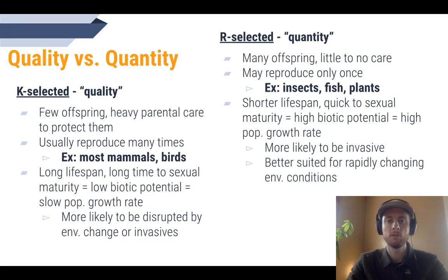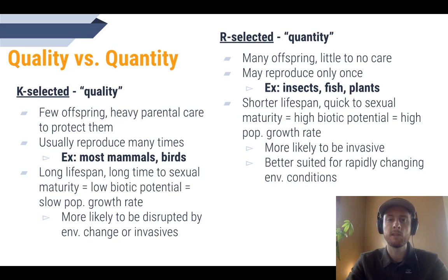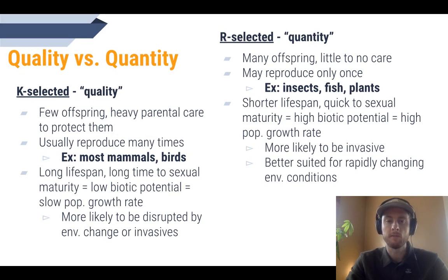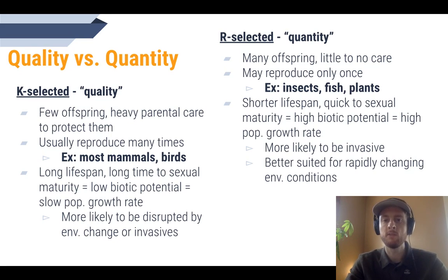As I mentioned in the intro, we have the reproductive strategies R and K-selected, and they sort of represent the quantity versus quality approach. Before we talk about the characteristics, we need to review that these are both reproductive strategies that different species take to passing on their genes. All species pass on their genes to offspring — it's basically the driving force behind all life — and these are just two different approaches to accomplish that goal. They both work and are both suited to the organisms that use them.